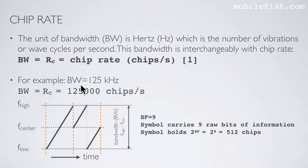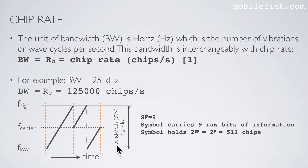For example, the bandwidth is 125 kHz, which is 125,000 Hz, so the bandwidth equals 125,000 chips per second. So the bandwidth is 125 kHz, which means it generates 125,000 chips per second. As I explained in tutorial 13,